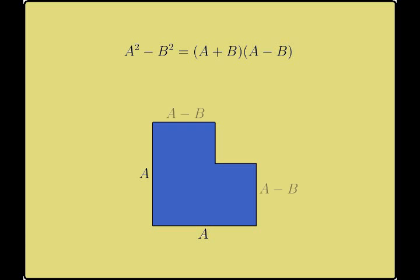This creates a shape with two sides of length A minus B. We wish to show that this shape has an area of A plus B times A minus B.